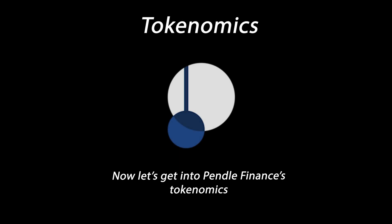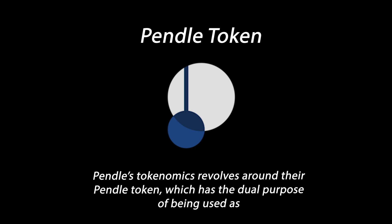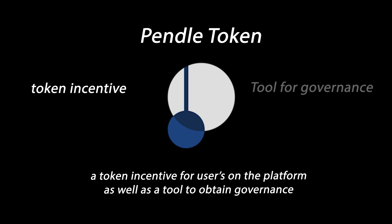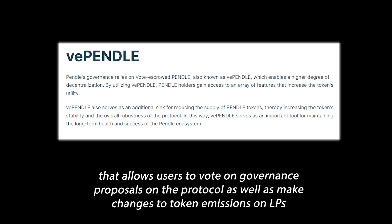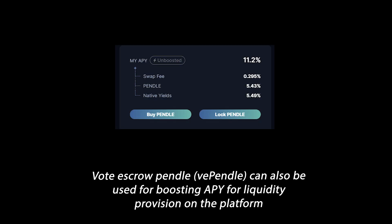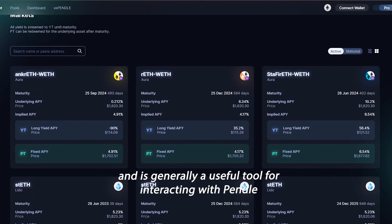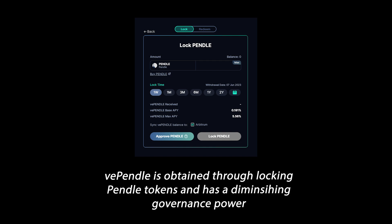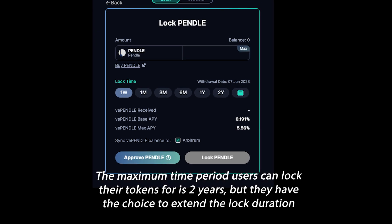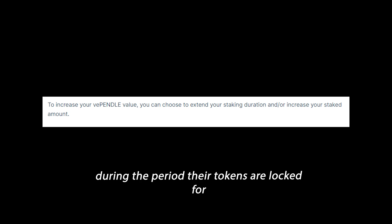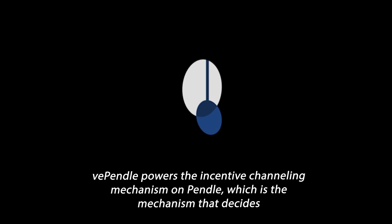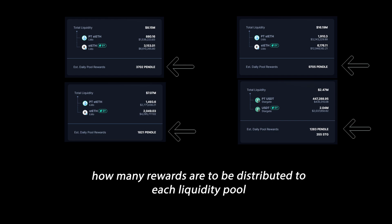Now let's get into Pendle Finance's tokenomics. Pendle's tokenomics revolves around their Pendle token, which has the dual purpose of being used as a token incentive for users on the platform, as well as a tool to obtain governance. Pendle Finance employs the vote escrow model for governance, with their own vePENDLE token that allows users to vote on governance proposals on the protocol, as well as make changes to token emissions on liquidity pools. Vote escrow Pendle can also be used for boosting APY for liquidity provision on the platform. vePENDLE is obtained through locking Pendle tokens, and has a diminishing governance power based on the remaining time until the token unlock. The maximum time period users can lock their Pendle tokens for is 2 years, but they have the choice to extend the lock duration during the period their tokens are locked for. vePENDLE powers the incentive channeling mechanism on Pendle, which decides how many rewards are to be distributed to each liquidity pool.